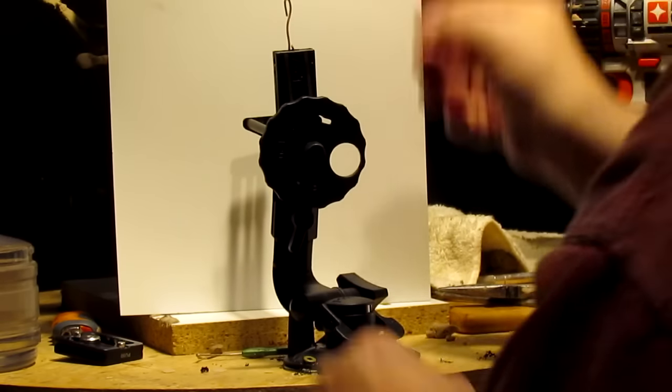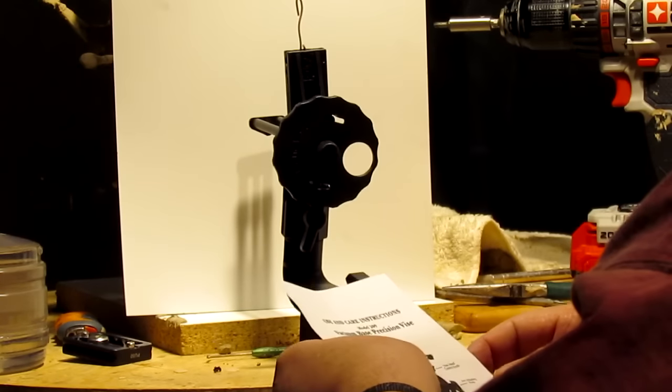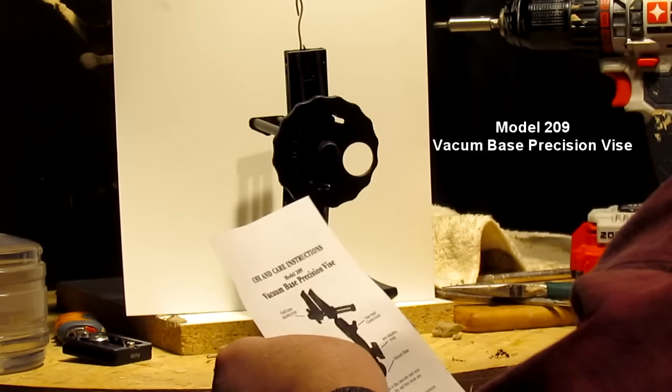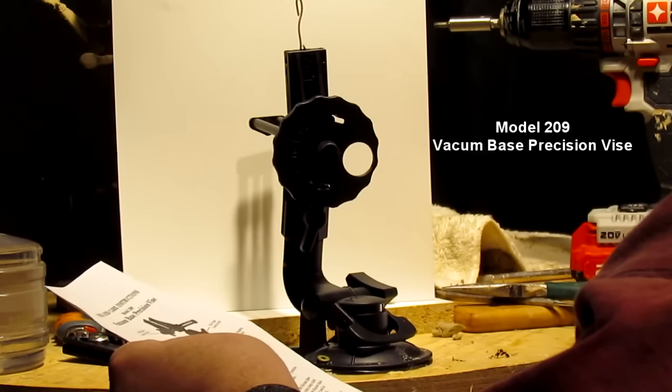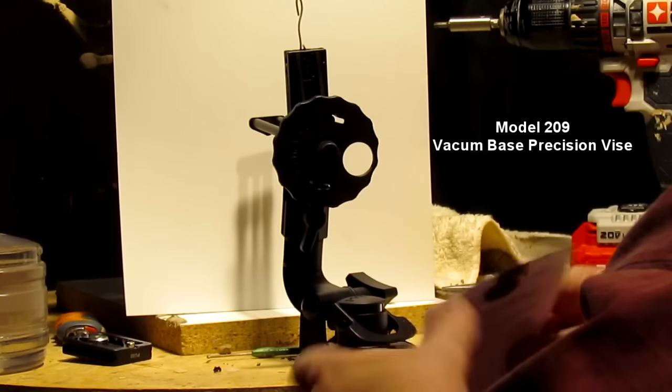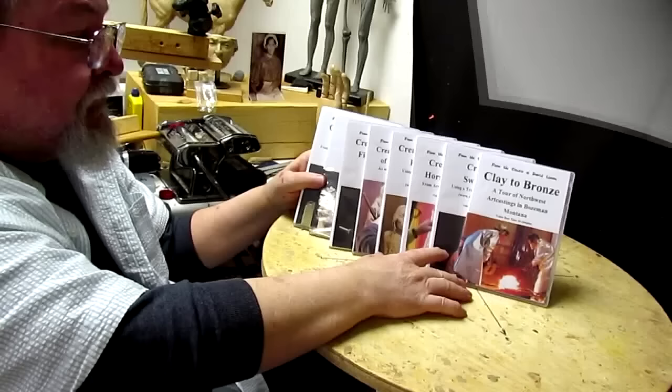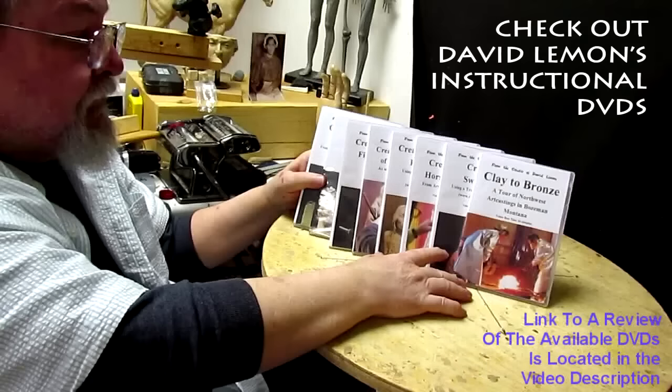Alright that's the, where, what is the name of this? It's the Model 209 Vacuum Based Precision Vise. I'll put the name up here on the video so you can see what that is. Anyway, alright, have a great weekend everybody. I'm gonna go back to doing my dishes. See you next week.